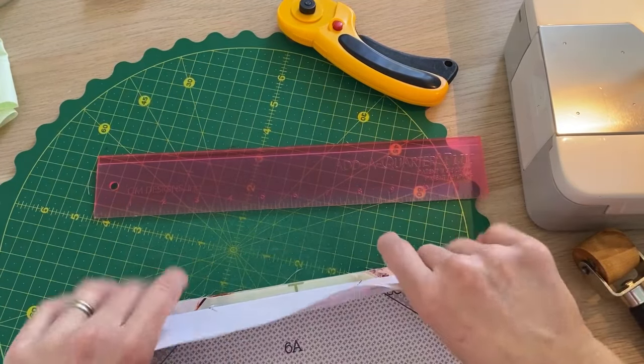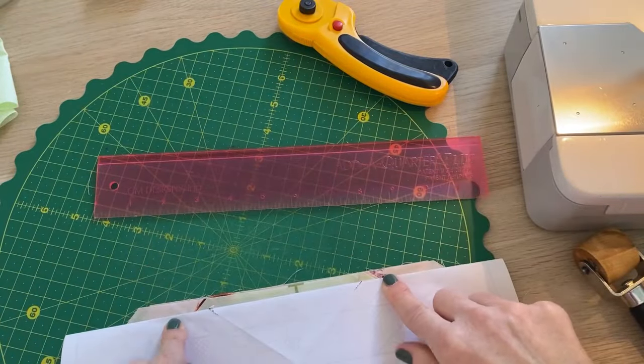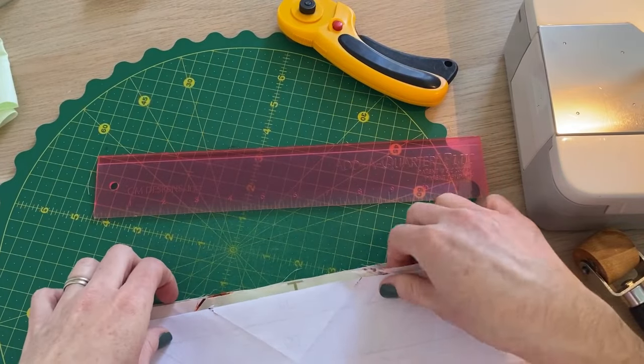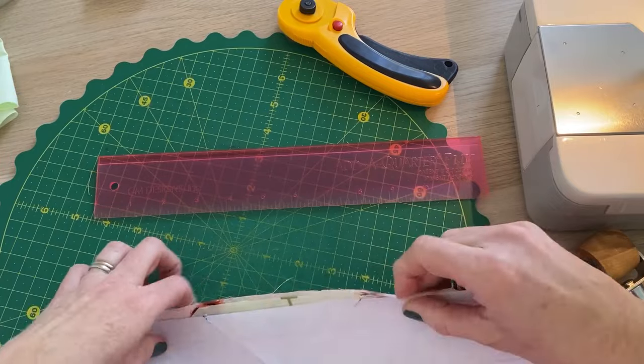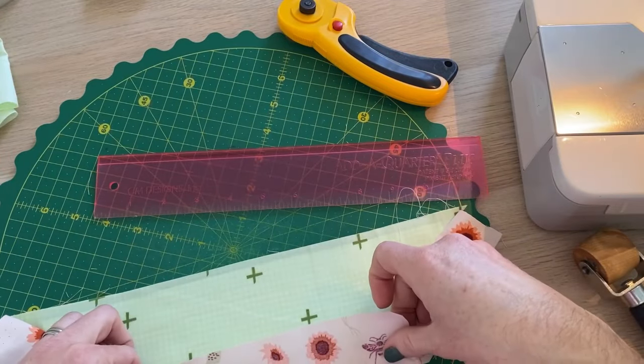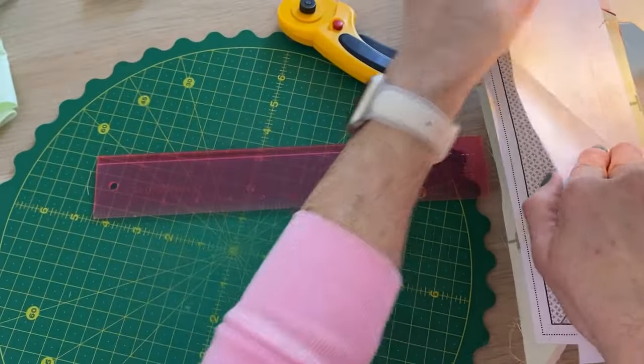Right sides together. Making sure that where we're at here, that our fabric extends at least to there on either side. It does. It does. It does. So again, smooth it out.